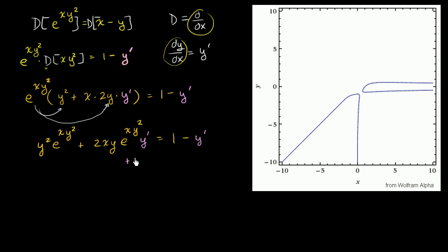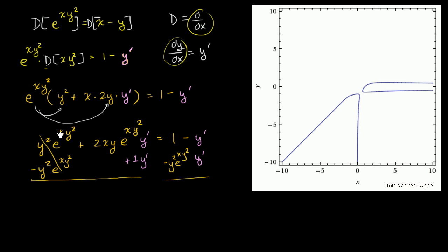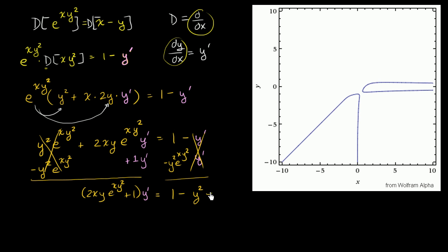Let's add y prime to both sides — adding 1 times y prime to both sides — and subtract y squared e to the xy squared from both sides. We're left with 2xy e to the xy squared plus 1, times y prime — we had the original y prime terms plus the additional 1 y prime — equal to 1 minus y squared times e to the xy squared.